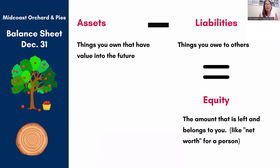Assets are things that you own that have value into the future — they're not expenses. Expenses are things we pay for in our business that get used up right away in operations, like rent, supplies, or small equipment. Assets are the big things: real estate, equipment, vehicles, and the money in your actual business bank account.